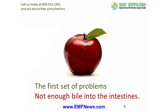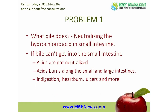Let's start with the first set of problems and consider what happens when the bile becomes too thick or full of stones to reach the intestines in required amounts. The first thing that bile does in the small intestine is to neutralize the acidity of the food coming out of the stomach. In order to disinfect and digest the food that we eat, the stomach secretes hydrochloric acid. The stomach doesn't digest itself because it has a special mucus layer that protects it from this hydrochloric acid.